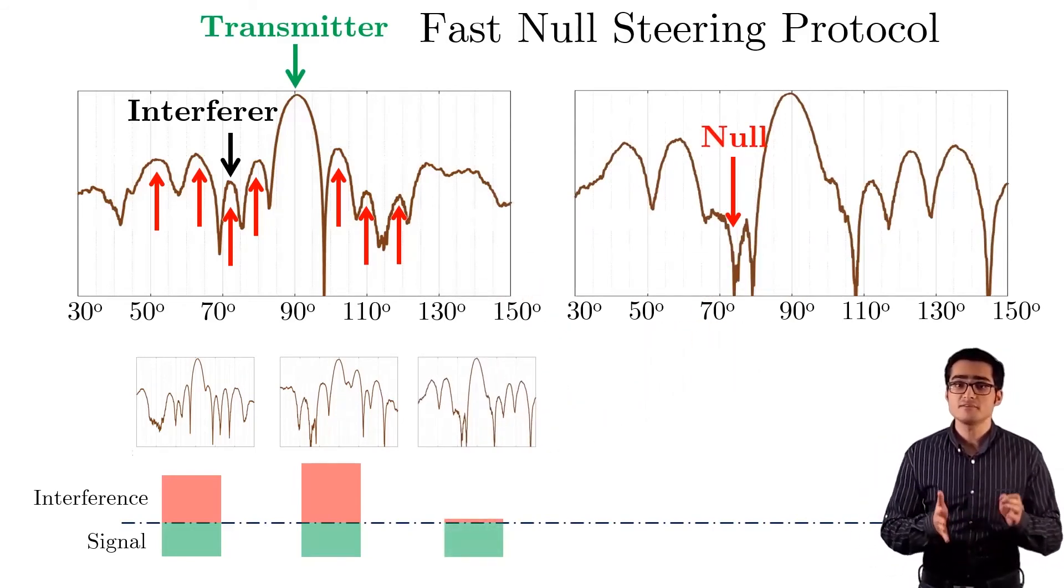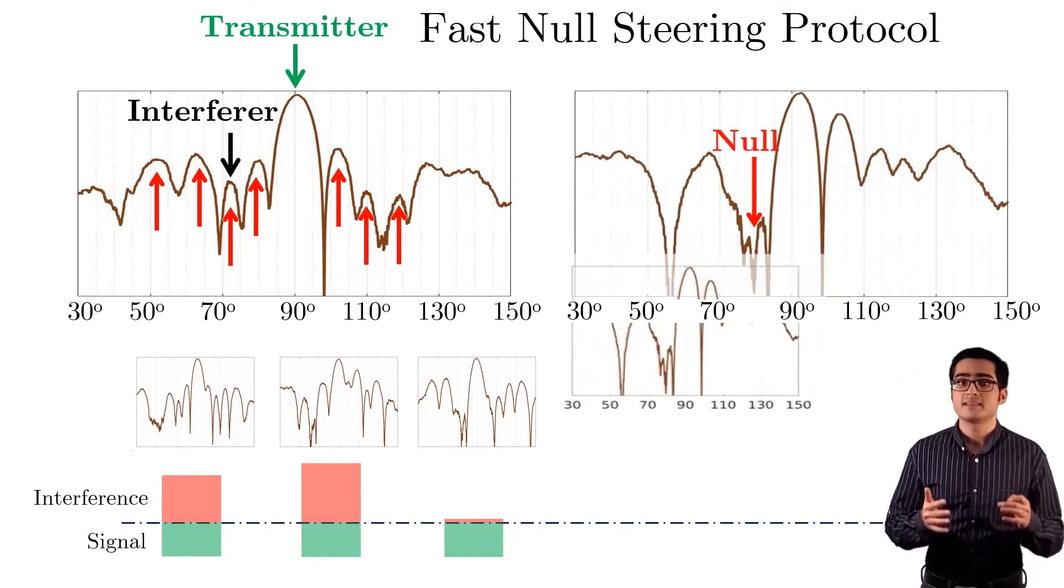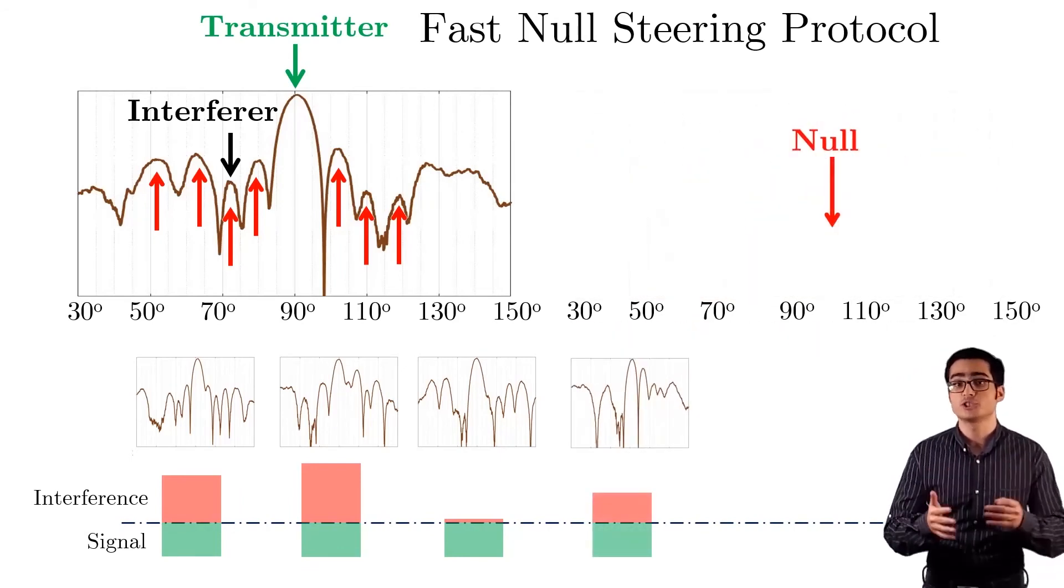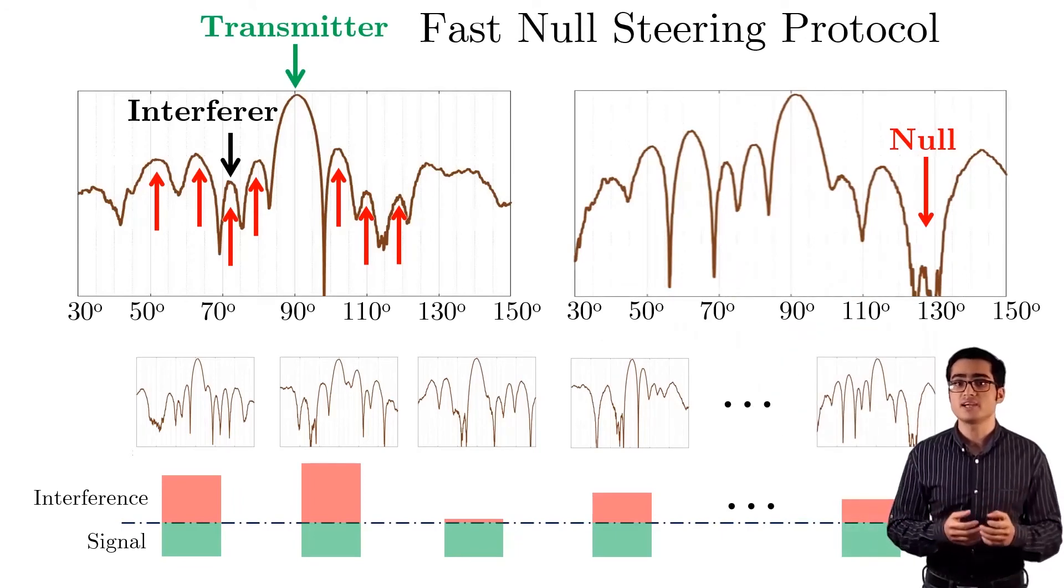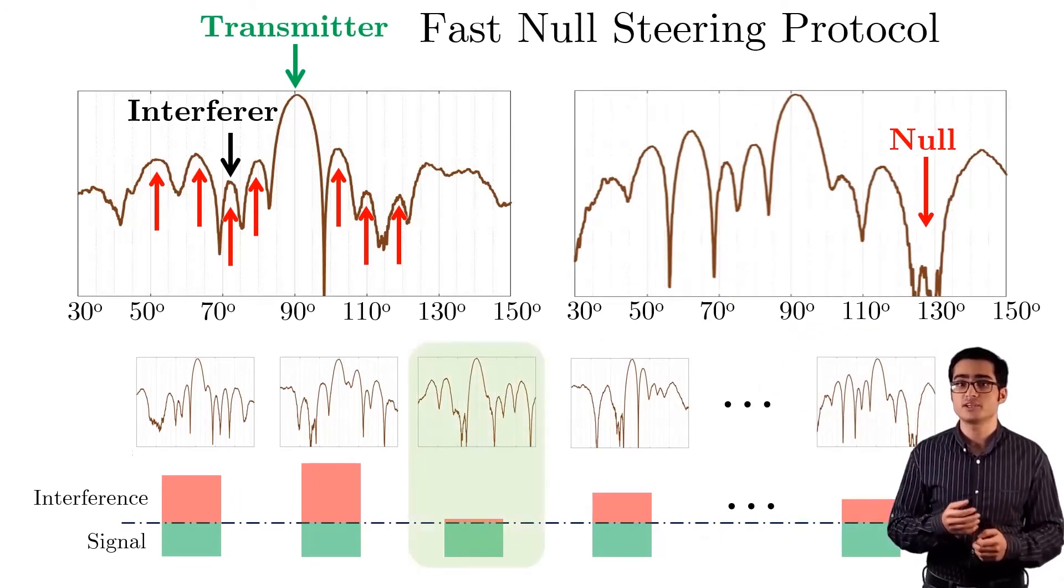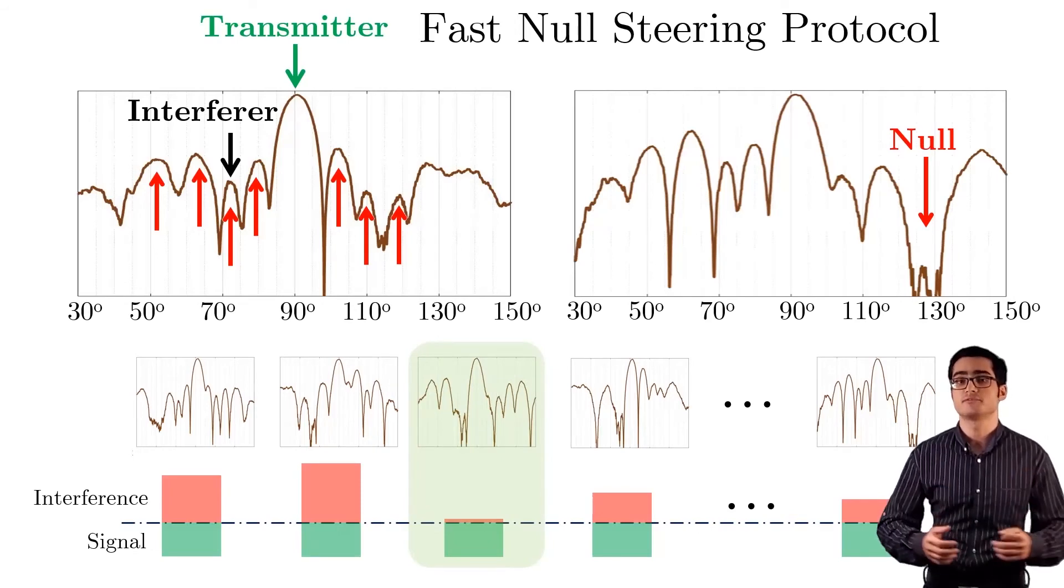Now, even if we continue from this point, we can confirm that the interference is coming from the third direction. Hence, Nullify is able to find the direction of the interference by only taking a few constant number of measurements.